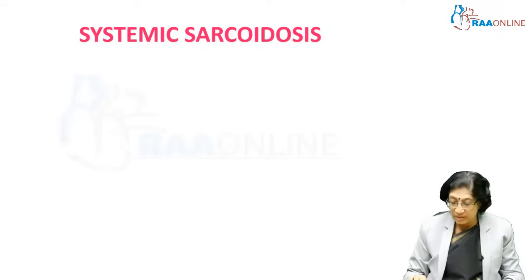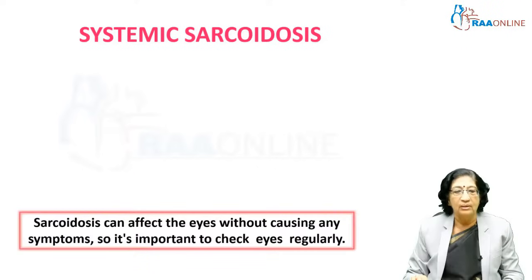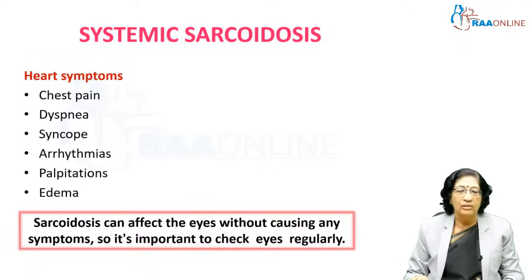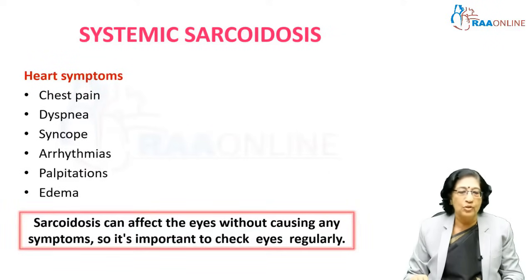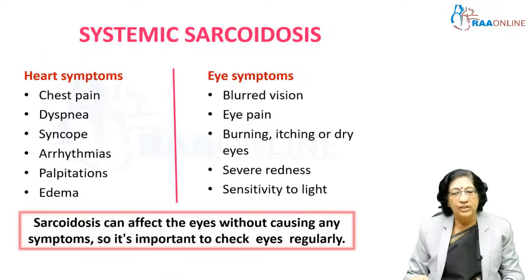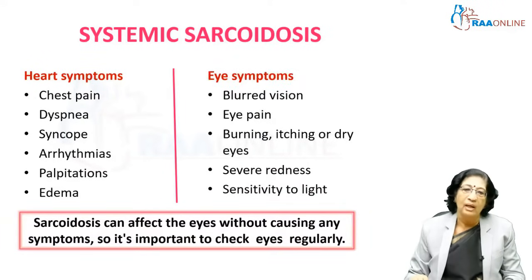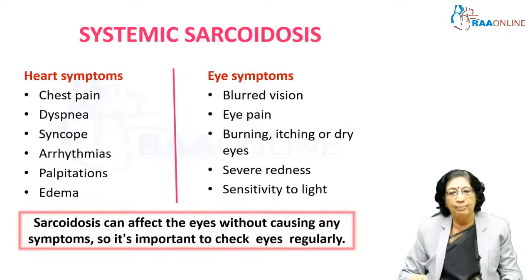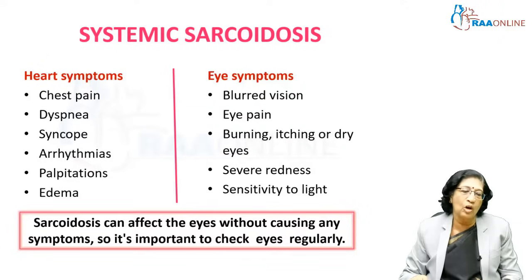Many systems can be involved in sarcoidosis. It can involve the heart, producing symptoms of chest pain, dyspnea, syncope, arrhythmias, palpitations, and edema. The eyes are very important in sarcoidosis and can produce blurred vision, eye pain, burning, itching, or dry eyes — which must be differentiated from the common dry eyes of aging.